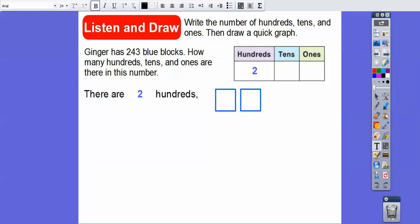Easy enough. So there are, it told us to draw a quick graph. So there's 2 hundreds. A square represents 100. There's 4 tens. Remember, the sticks represent tens. So each stick has 10. And remember, this hundreds has 10 tens. And then ones. There are 3 ones. So just a circle is perfect.